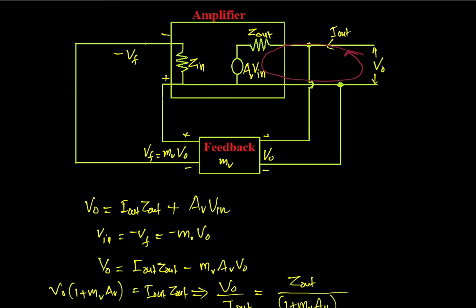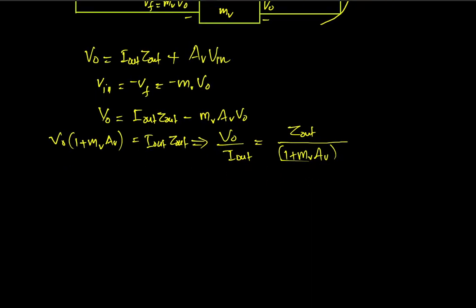Now, V0 / I_out represents the impedance of the entire circuit seen by the voltage source — that is, the output impedance of the amplifier with feedback. So the left-hand side of this equation is Z_out_F, the impedance of the amplifier circuit with feedback, which equals Z_out divided by (1 + MV · Av).